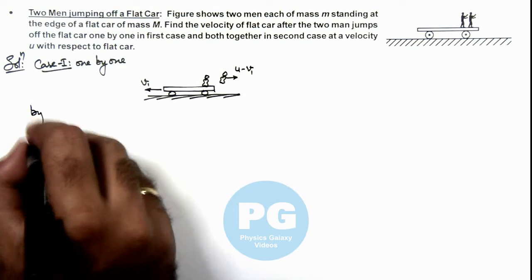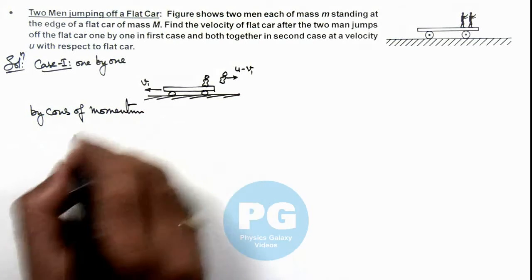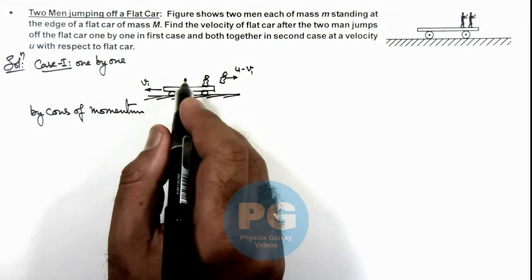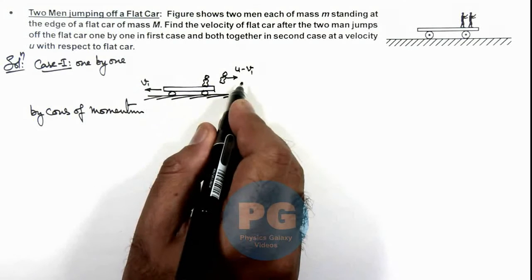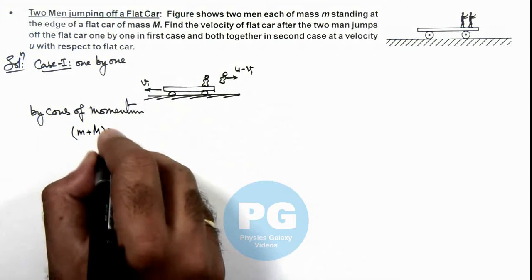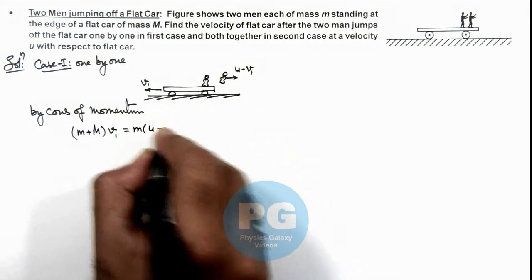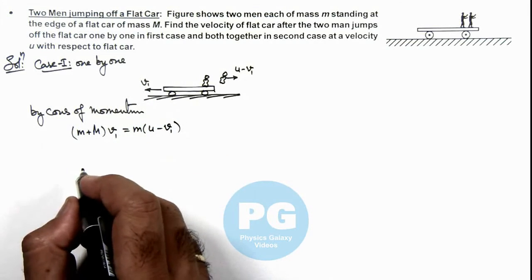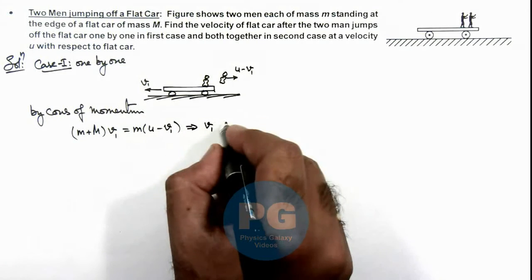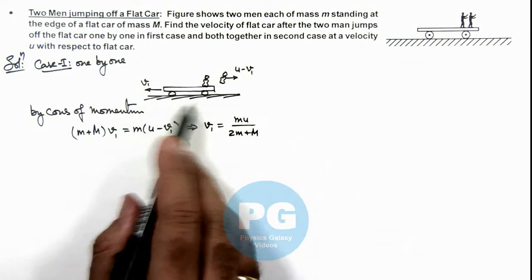And here we can write by conservation of momentum, we can write initial momentum was zero, so after jumping off the man, the total momentum must be zero or the leftward momentum would be equal to the rightward momentum. So here we can write (m + M)v1 is the momentum in the car plus one boy, and this should be equal to m multiplied by (u - v1), which gives us the velocity v1 attained by the flat car, which is equal to mu/(2m + M). This is the velocity attained by the car.